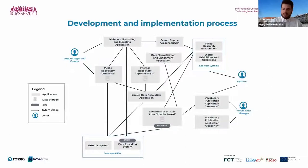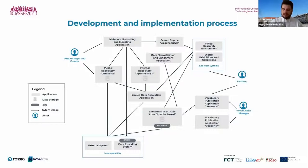Figure one presents the applications that form the ROSSIO infrastructure, how they are related, and which users they interact with, as well as which applications interoperate with external systems. During initial operation, metadata harvested from data providers will use a simple data model based on the 15 elements of the Dublin Core Metadata Element Set. Nevertheless, ROSSIO's applications are being implemented to support a richer data model consisting of a profile of the European Data Model (EDM), defined in 2017 by a working group from Portuguese academic and cultural heritage institutions, named the EDM-DRD application profile.